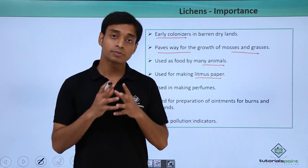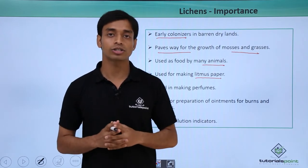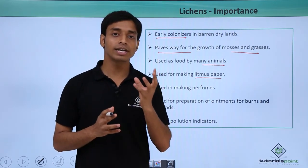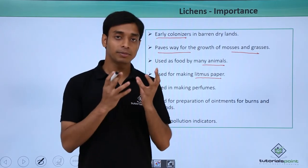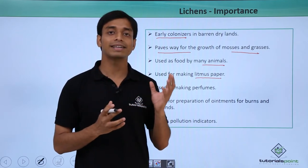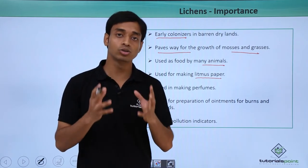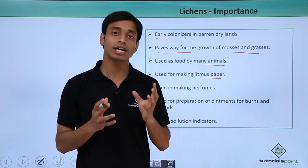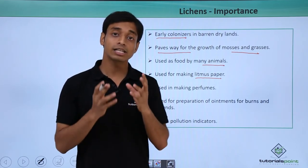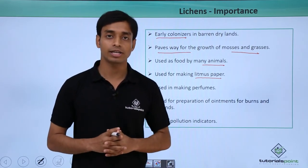A very important role of lichens is that they can act as good pollution indicators, specifically for pollution due to sulfur dioxide. If in a particular area the amount of lichens is reducing, it indicates that there is huge pollution — specifically that pollution is due to sulfur dioxide.